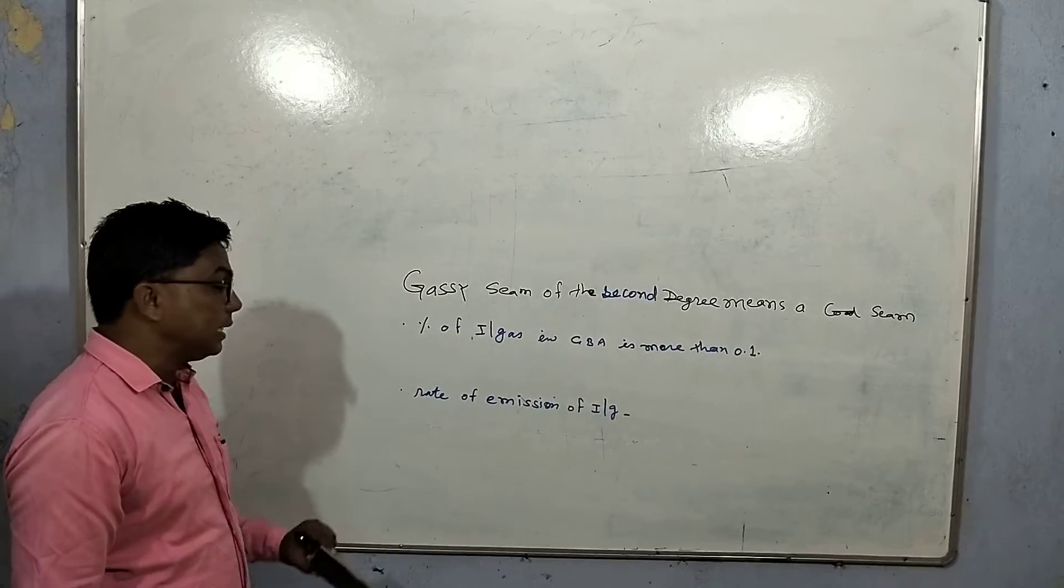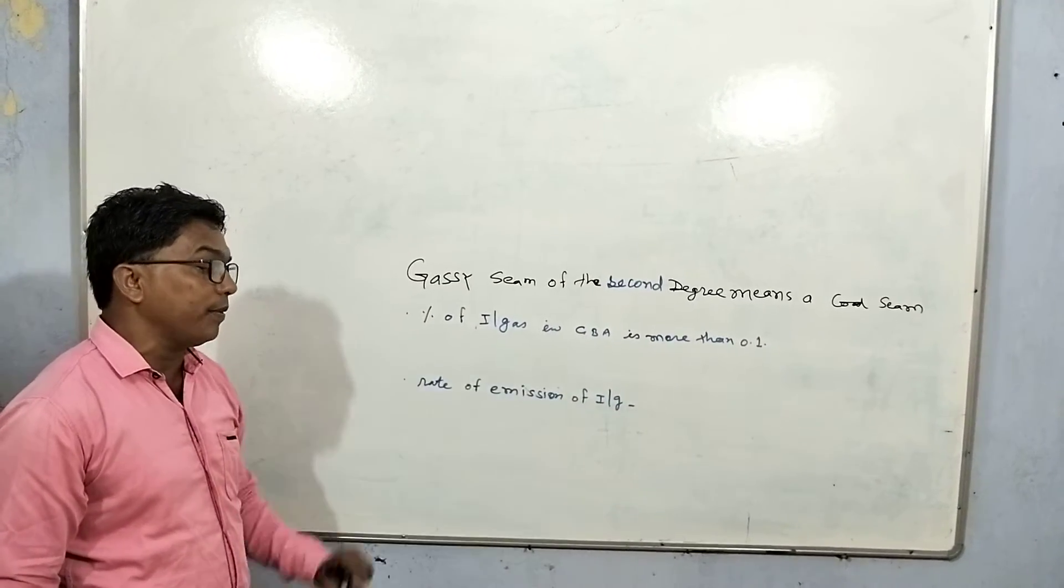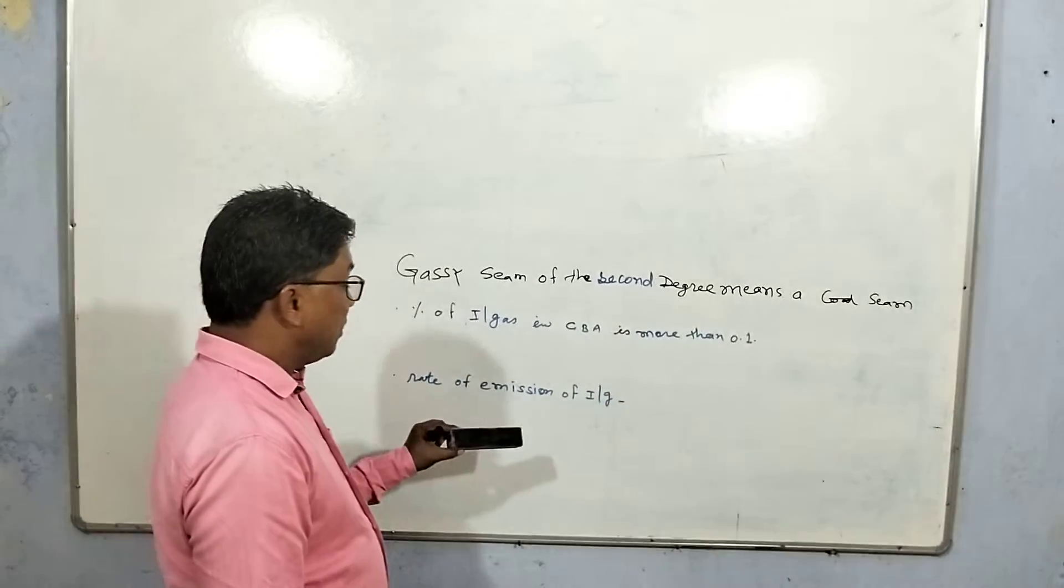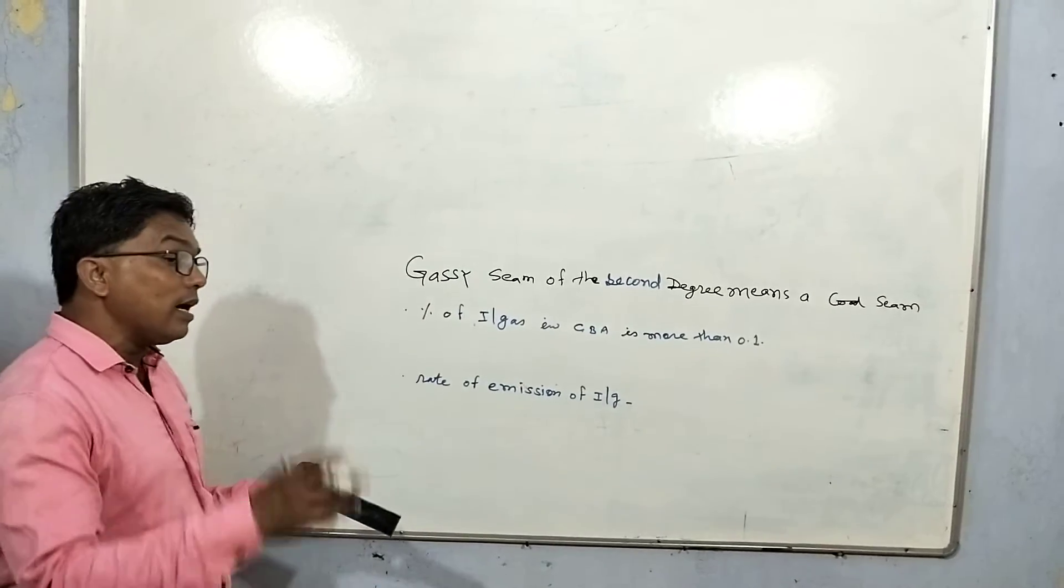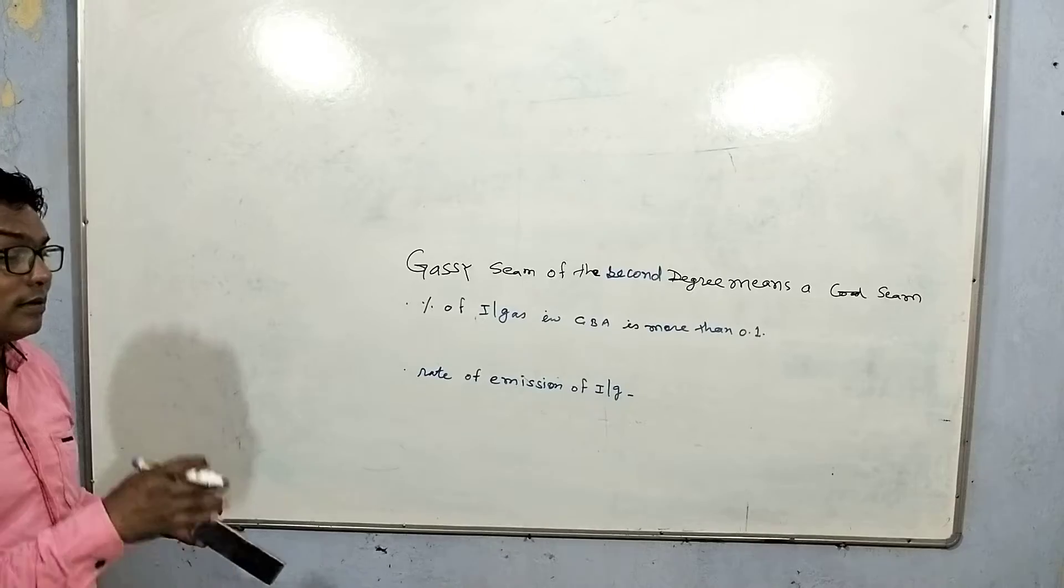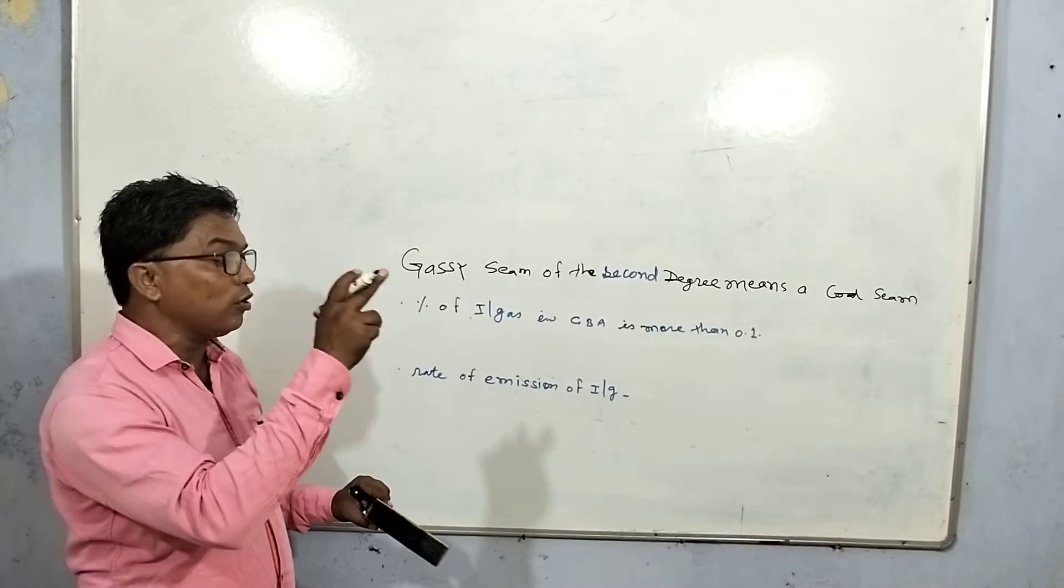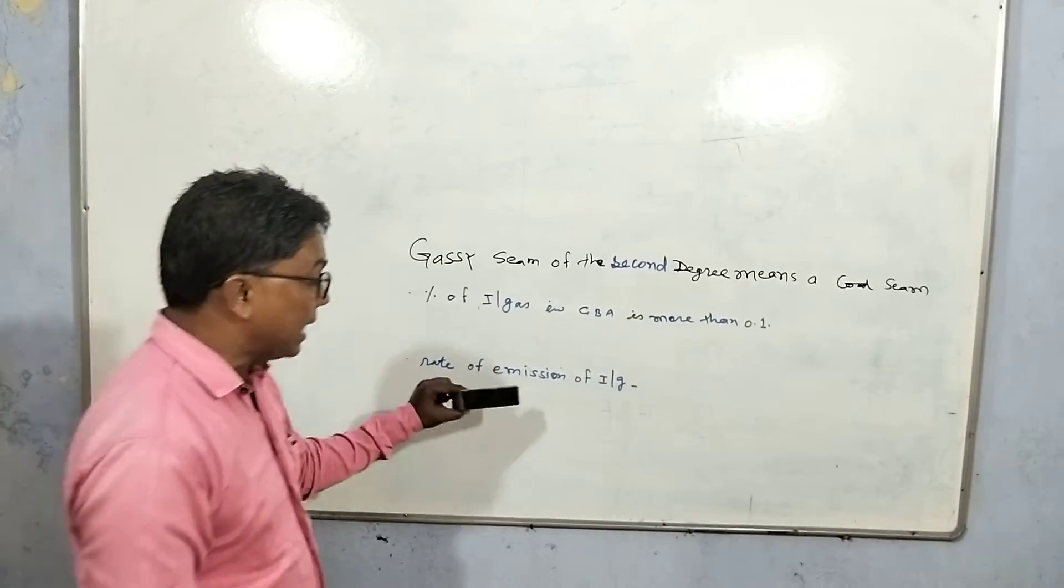Number two criteria is rate of emission of influx gas. Rate of influx gas does not exceed one cubic meter per ton of coal produced. But here, rate of emission of influx gas is more than 1 cubic meter per ton of coal produced.